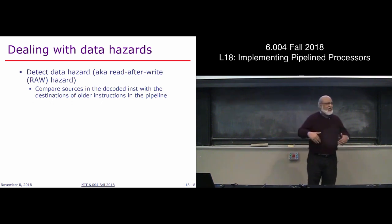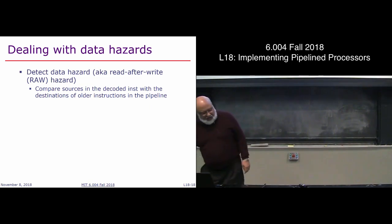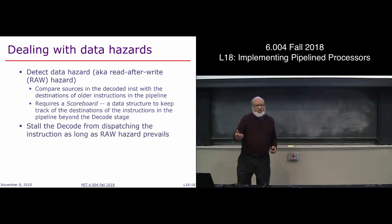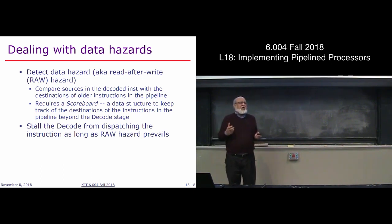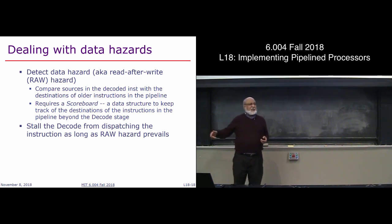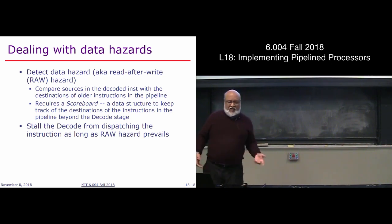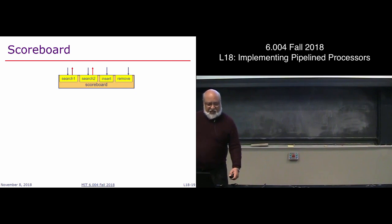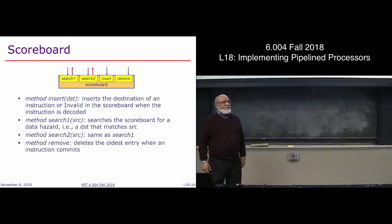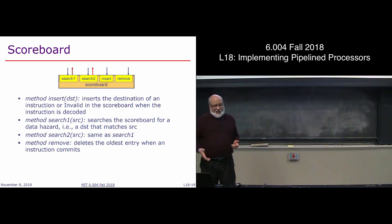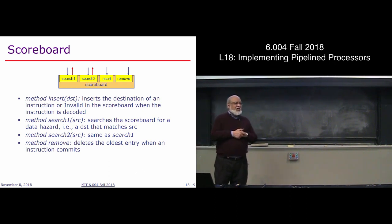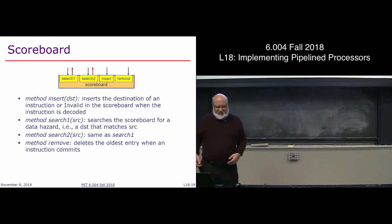We need a mechanism for stalling. We need to introduce the concept of a scoreboard, which keeps track of all destination registers being written by any instruction currently in the pipeline. You can search the scoreboard to see if any instruction is writing a given register — returns true or false. You can insert a destination register into the scoreboard or remove something from it. In decode, check each source register against the scoreboard; if any instruction ahead is writing that register, there is a data hazard and we must stall until those instructions finish.